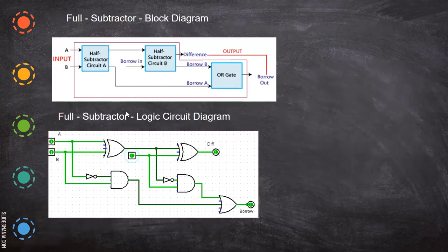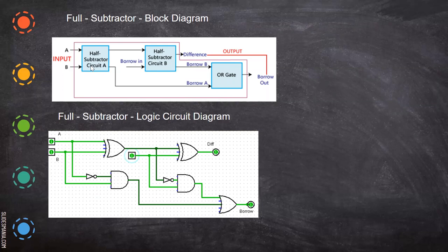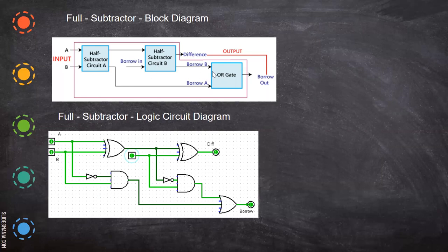Before drawing the circuit diagram, we look at the block diagram. We use two half subtractors — just like how we used two half adders for a full adder. Both inputs A and B are given to the first half subtractor. The output of the first half subtractor becomes one input of the second half subtractor, and borrow-in is the other input.